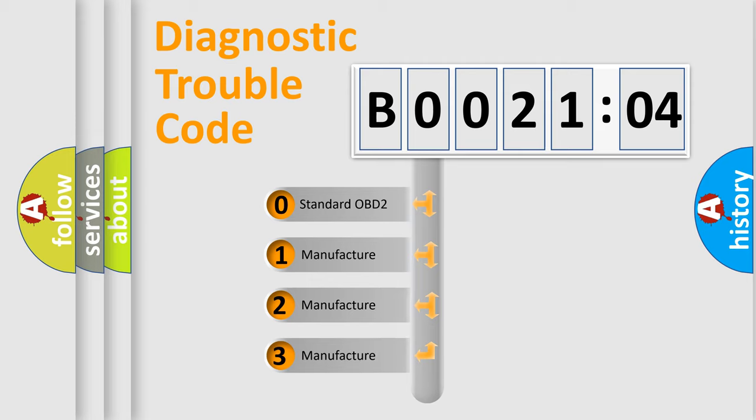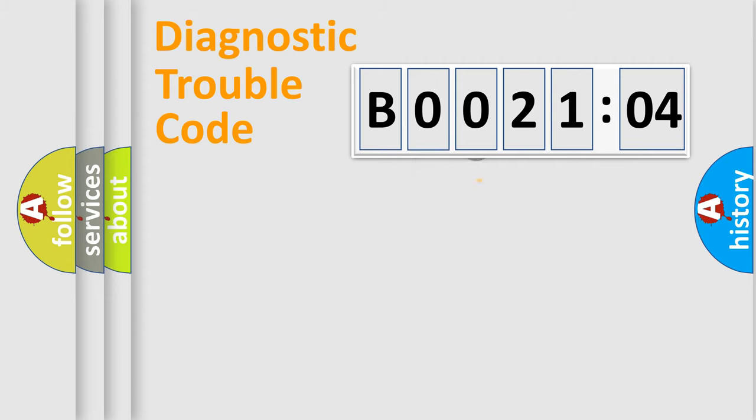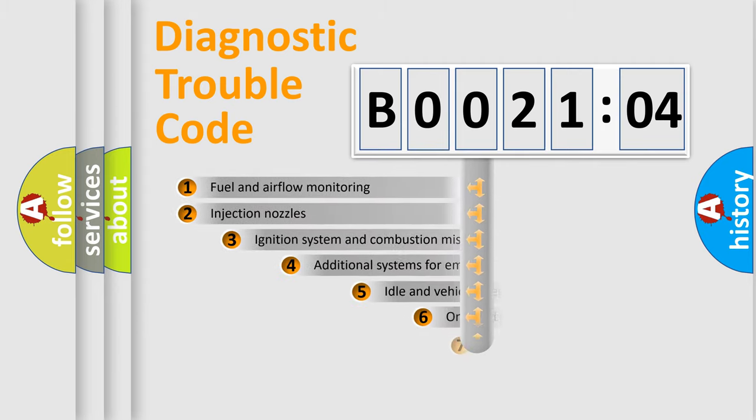If the second character is expressed as zero, it is a standardized error. In the case of numbers 1, 2, or 3, it is a more prestigious expression of the car-specific error.